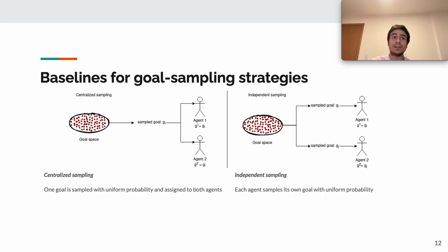Centralized sampling: one goal is sampled with uniform probability and is assigned to both agents. Independent sampling: each agent samples its own goal using its uniform distribution. 50% alignment: each agent samples its own goal using its uniform distribution, as it's done in independent sampling, but in half of the training trials, we interfere in this sampling procedure and externally provide the agents with the same goal, as done in centralized sampling.